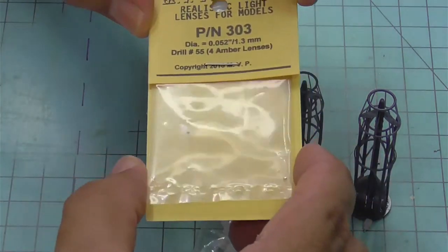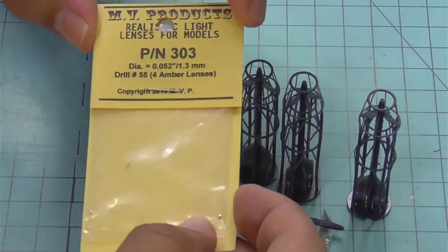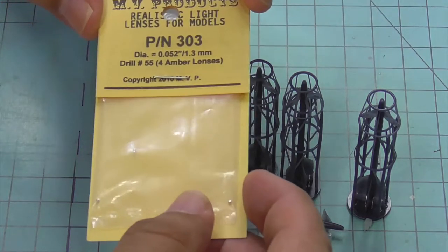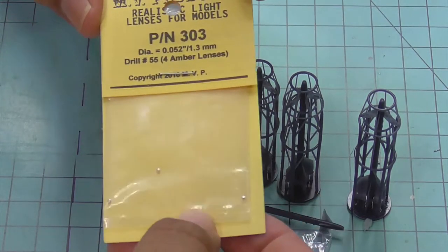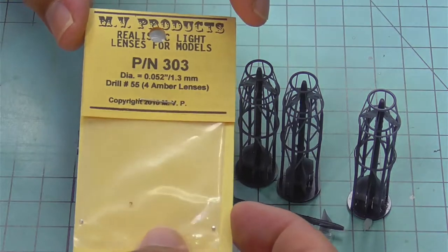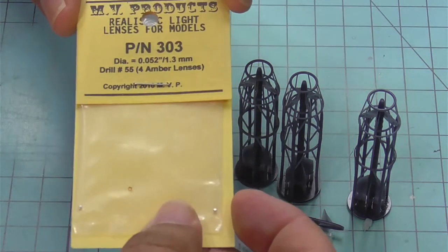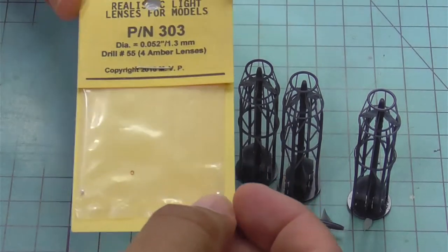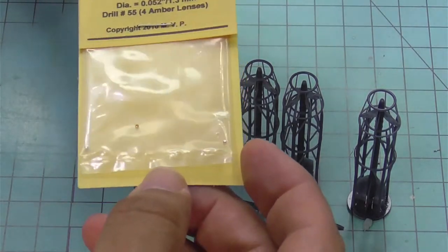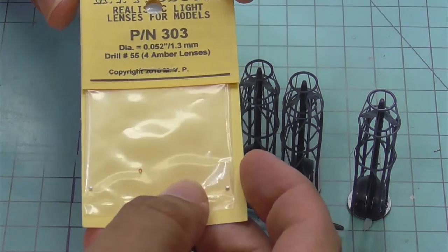Although they are currently unavailable, we're also going to show off MV Products lenses set 303. If you're able to find these, they will work excellent on the missiles that Richard has produced.